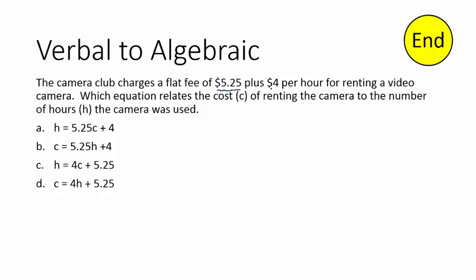$5.25 plus $4 per hour — I'm going to circle that piece. These two are very important pieces. For renting a video camera, which equation relates the cost C of renting the camera to the number of hours H the camera is used? So cost equals — if we rented it for 3 hours it would be 4 times 3. We don't know how many hours, so the general equation would be $4 times the number of hours rented, plus that flat fee of $5.25. There's no variable attached to it because that doesn't change.